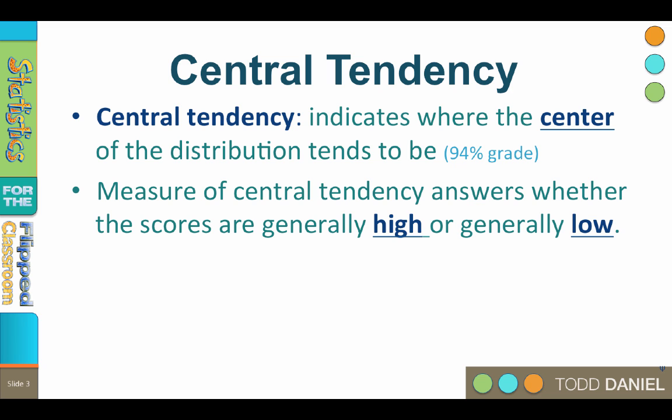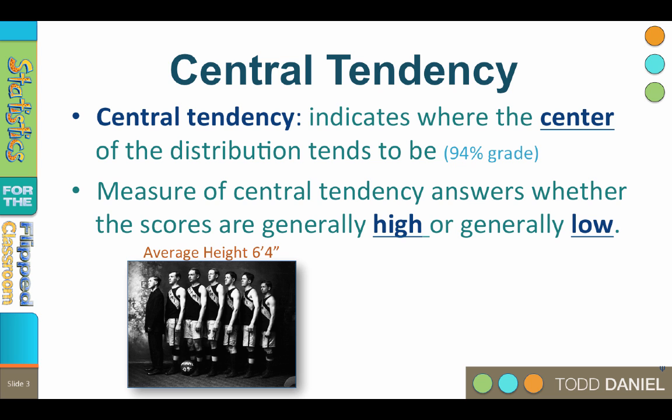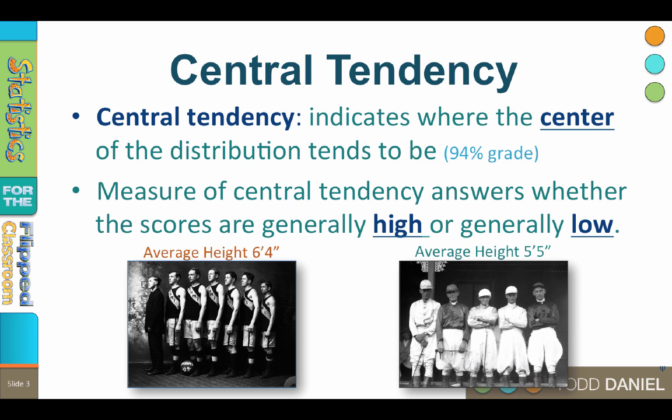For example, if I tell you about my friend who is a basketball player, what do you assume about his height? Based on what you know about basketball players in general, you might assume that his height is above average, because you know that the height of basketball players is generally high. If I tell you about my friend who is a horse jockey, you might assume that his height is generally low. These estimates are based on what you already know about what the heights of certain individuals tends to be — you are using a measure of central tendency.